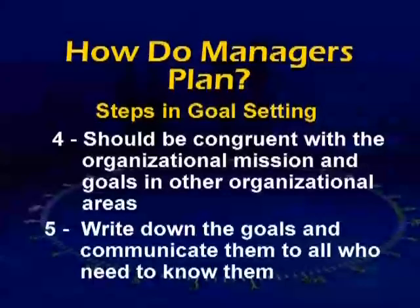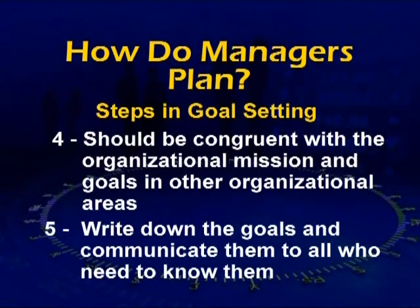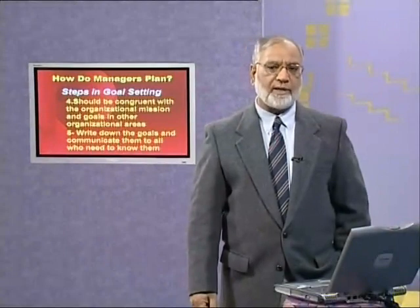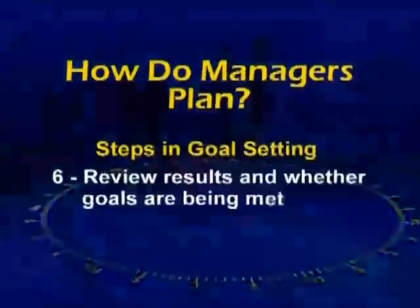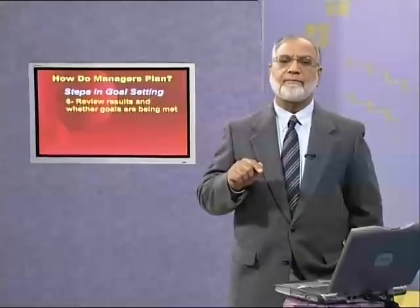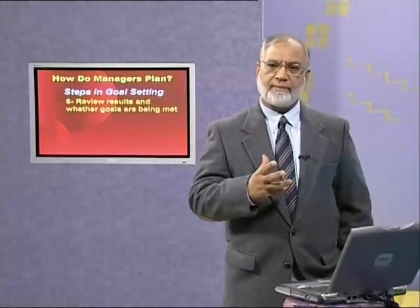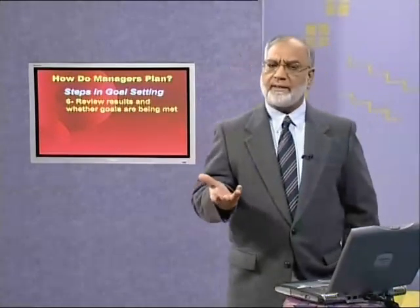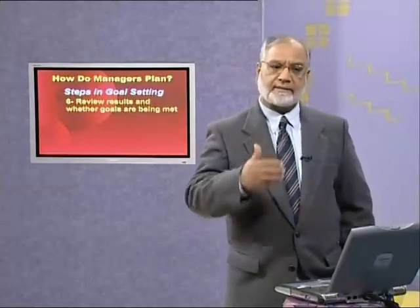We are talking about congruence — the organization's goals must match its mission. Number five: write down the goals and communicate them to all who need to know what those goals are, because unless you communicate them, how will people help you in goal achievement? And if goals are not achieved, how will performance improve? Number six: review the results — whether goals are being met or not. This is a complete process. The last part is to review it for the next planning cycle, which could be the next quarter, next month, next week, or next day.